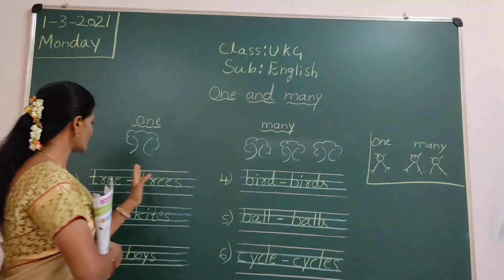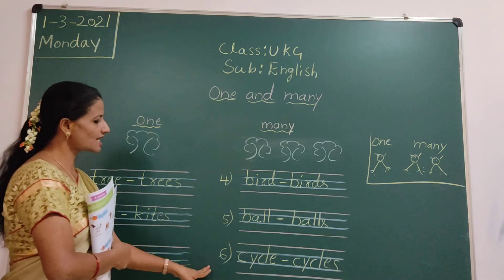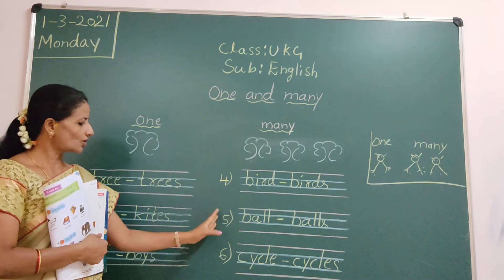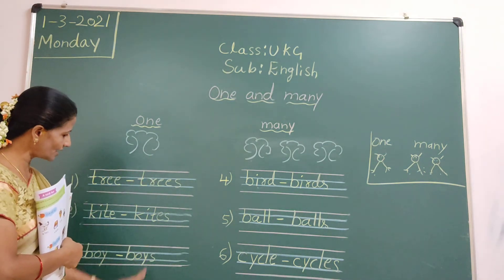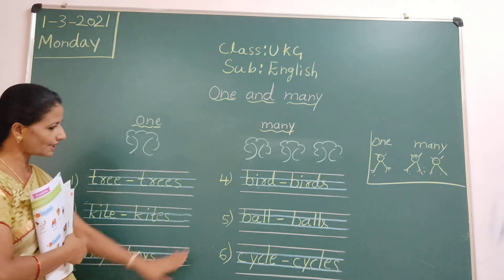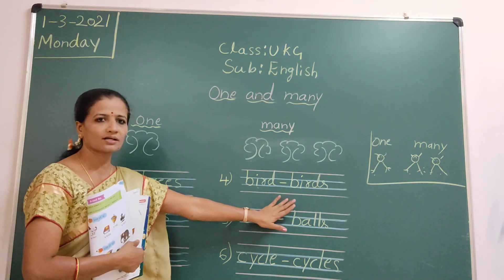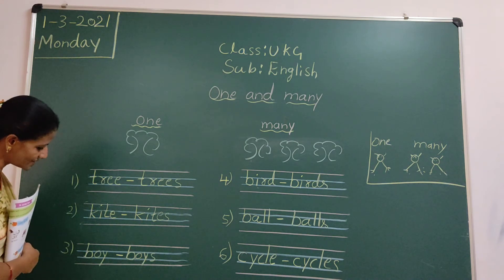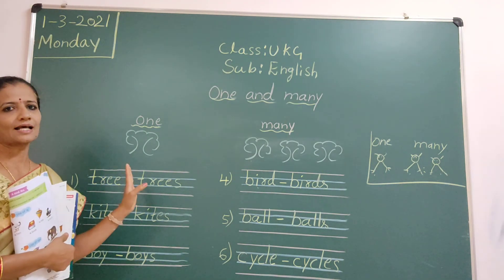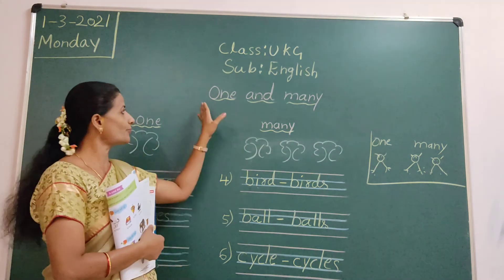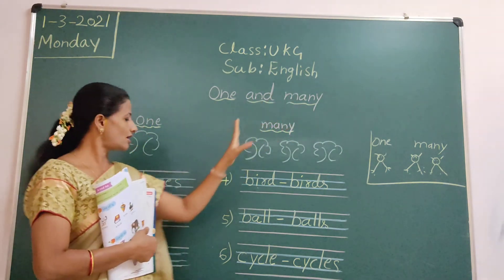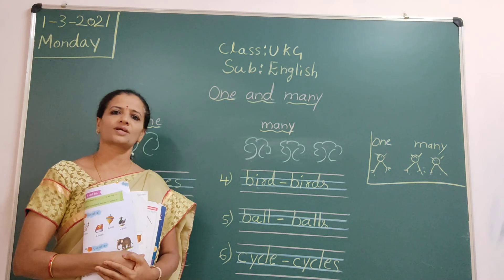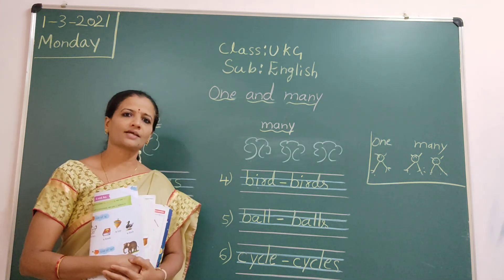Understood children? Write in English classwork neatly these six words. Write in one page only, write full — all six going down. You have to write the full page. Copy to classwork, English classwork. Topic: one and many. After these six words, copy the English classwork. Okay children, see you in the next class. Thank you children.